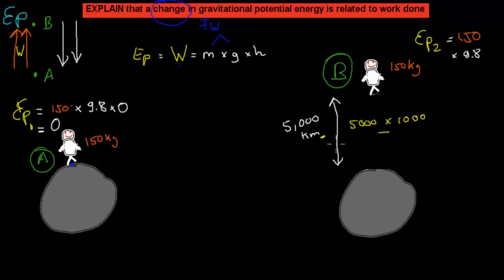And then times the height, and that would be 5,000 times 1,000. Because 5,000 kilometers is from the surface to where he is now, but we have to times it by 1,000 to get it into meters. So we have 5,000 times 1,000, that's our height.